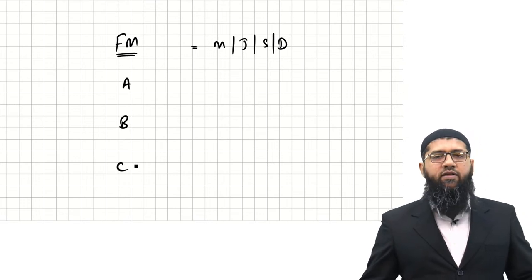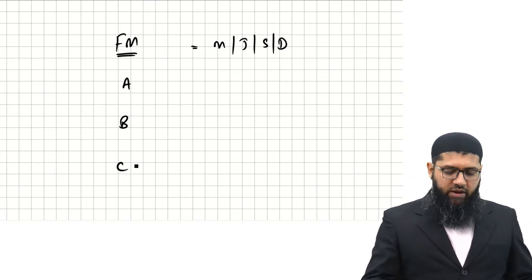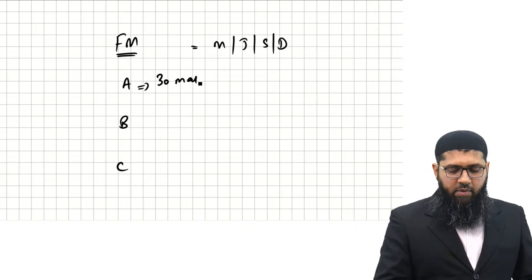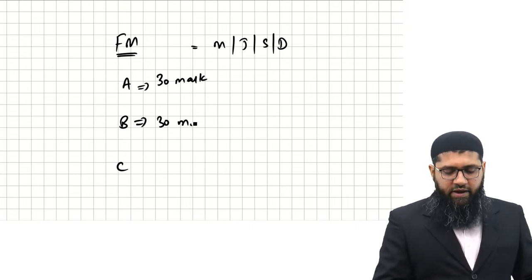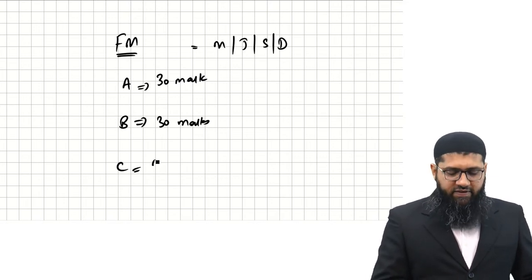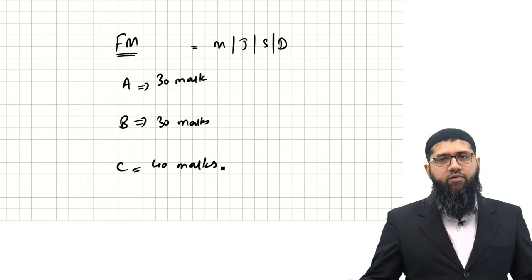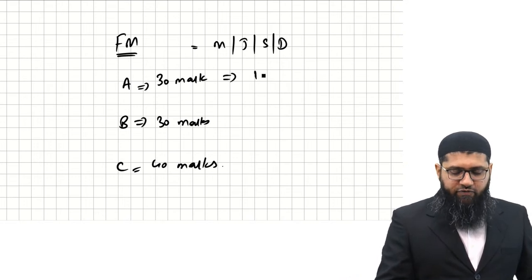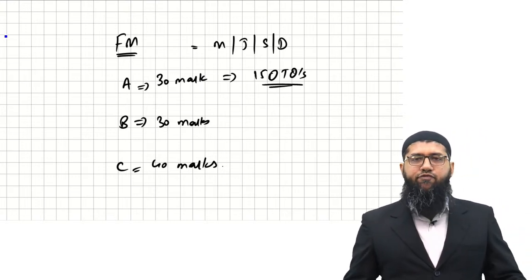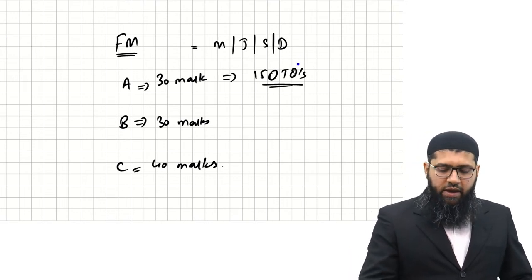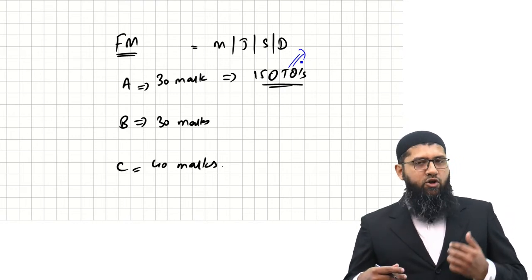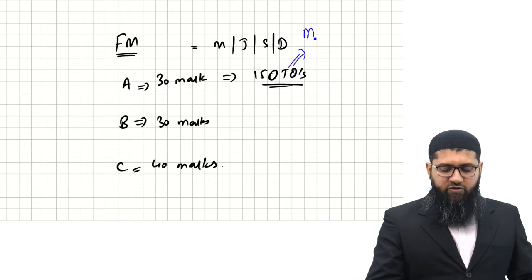The paper has three sections: Section A, Section B, and Section C. Section A is a 30-mark section, Section B is also a 30-mark section, and Section C is a 40-mark section. In Section A, the examiner tests 15 OTQs. You need to understand the difference between an OTQ and an MCQ — an OTQ is not just choosing one option from four.